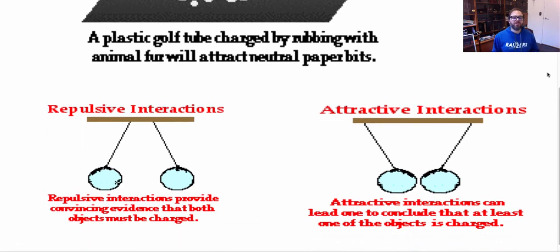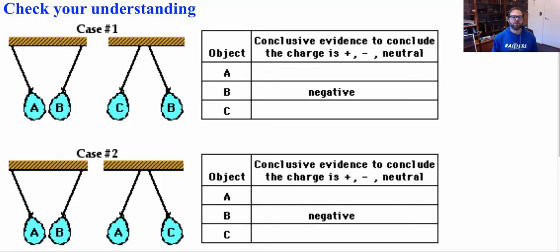For things to repel, we need to have two objects that are charged with like charges. But for things to attract, we really only need one object charged. If we have two charged objects, they must be opposite, or only one object is charged. Now let's see how well you understand this concept.